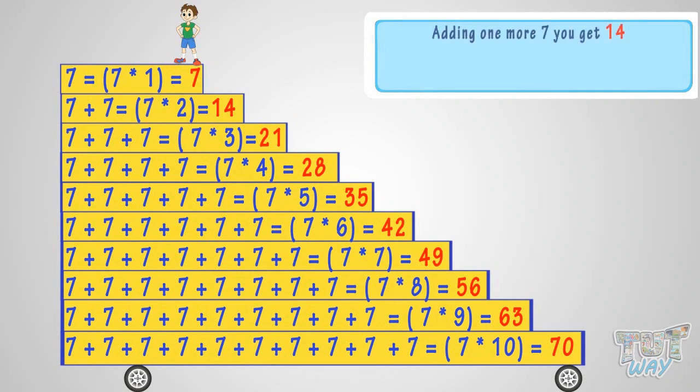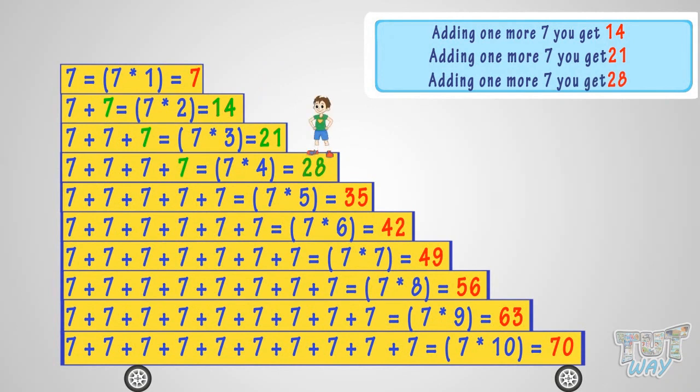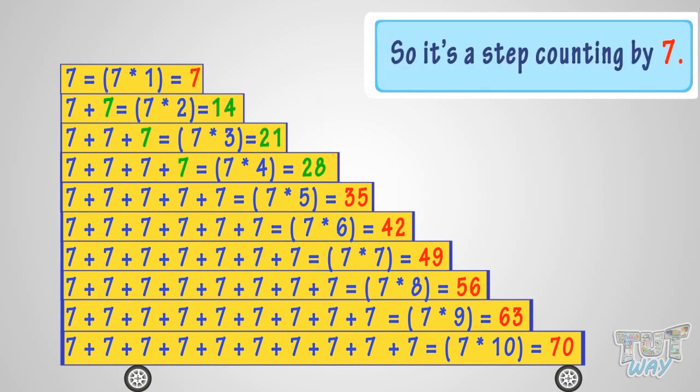Adding one more 7, you get 14. Adding one more 7, you get 21. Adding one more 7, you get 28. And so on. So, it's a step counting by 7.